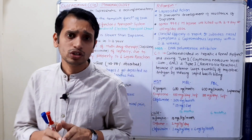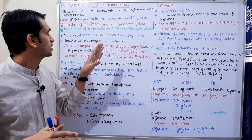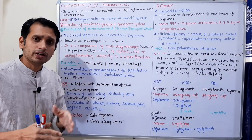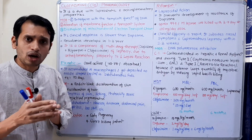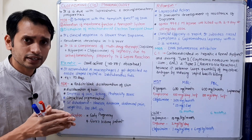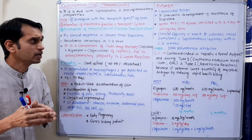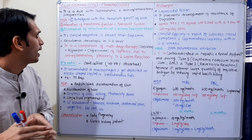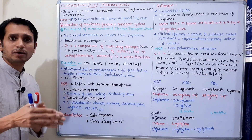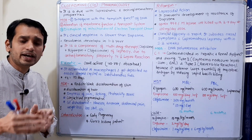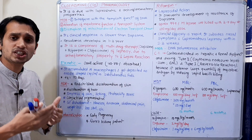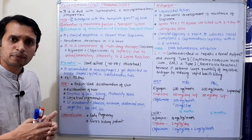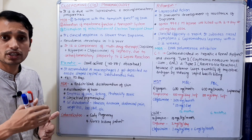Now we come to the basic pharmacology of Clofazimine, which is the second drug discussed in this video. The first drug, Dapsone, has already been covered in a previous video — you can find the link below. Clofazimine is a dye with leprostatic activity, and it also has an anti-inflammatory property that is helpful in leprosy therapy.